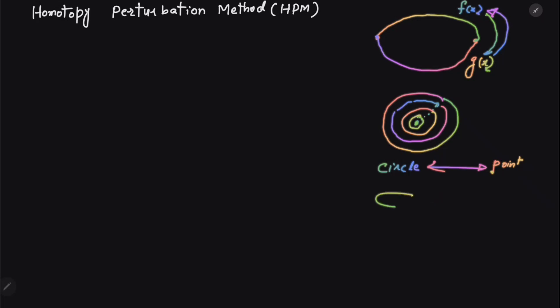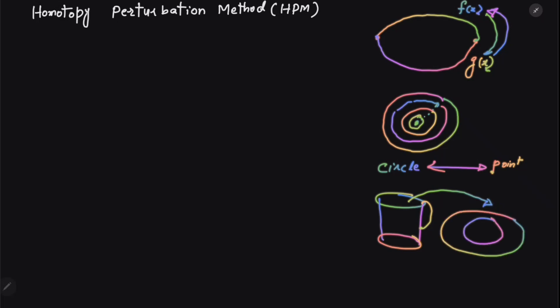Similarly, if we have a mug — some kind of mug, a very rough drawing — in topology this mug can be converted into a torus, a kind of donut. But there are certain conditions: the mug can become a torus and the torus can become a mug. So it's a kind of rubber, or maybe a kind of slime which children usually play with. That's the basic idea of topology.